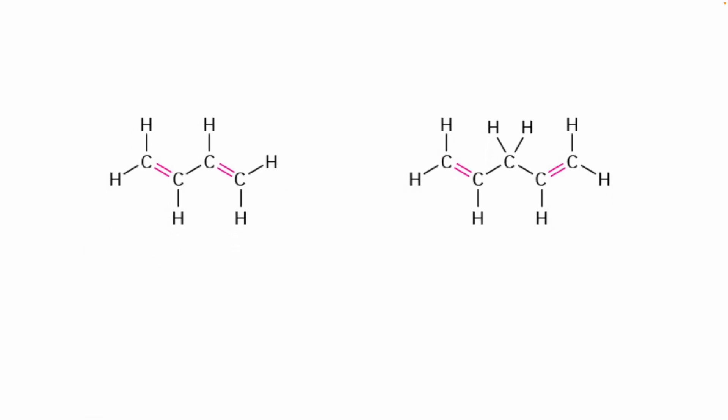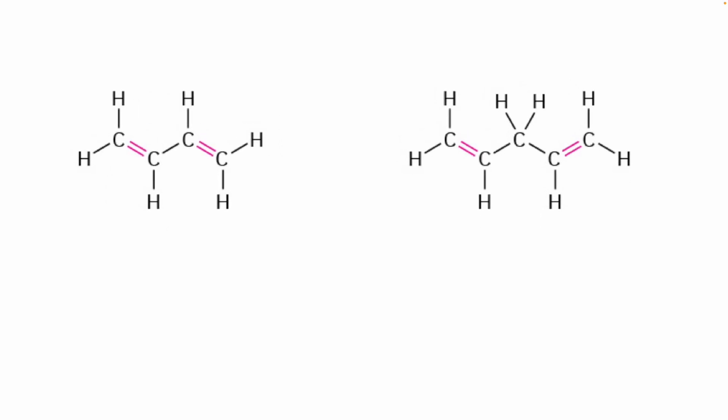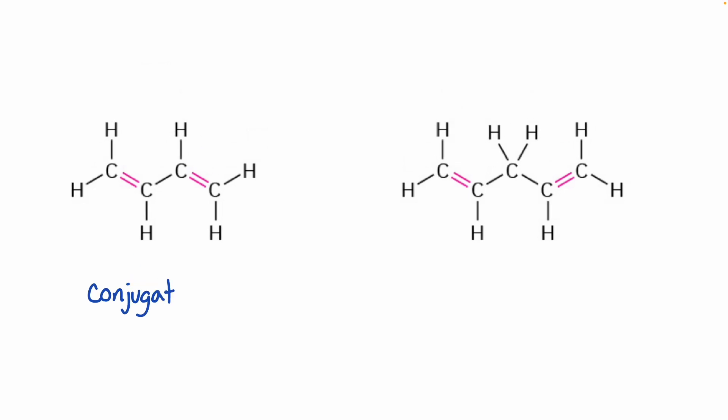This chapter is called Conjugated Dienes. The first thing we did was learn how to look at the structure of a diene and classify it as either isolated, accumulated, or conjugated. For these two structures, the one on the left would be conjugated. This is really our focus for this chapter — conjugated dienes.